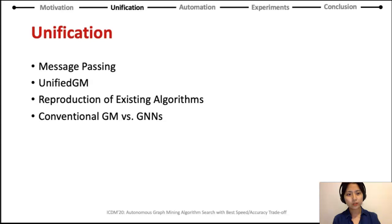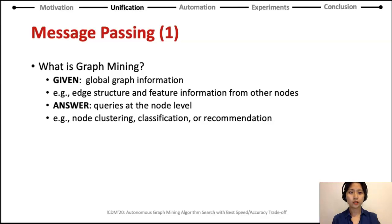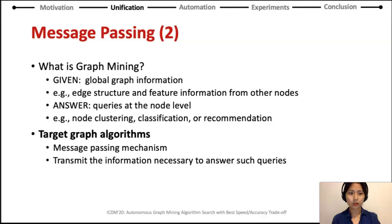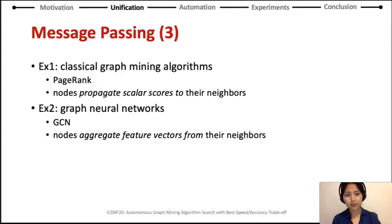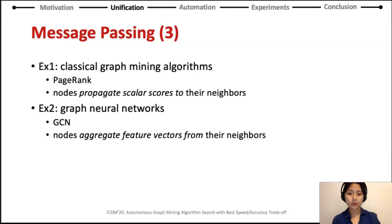In the unification of graph mining, we first introduce the target algorithms of this unification, then show how existing algorithms fit in our framework. Our framework embraces conventional graph mining and recent graph neural networks, and we compare these two approaches under our framework. A goal common to many graph mining algorithms is to answer queries at the node level based on global graph information. Our unified framework targets graph algorithms that use the message passing mechanism, which transmits information necessary to answer such queries across edges. In classical graph mining algorithms, nodes propagate scalar scores to their neighbors, while in graph neural networks, nodes aggregate feature vectors from their neighbors. In short, both families of algorithms pass messages — scalars or vectors, inbound or outbound — among neighbors.